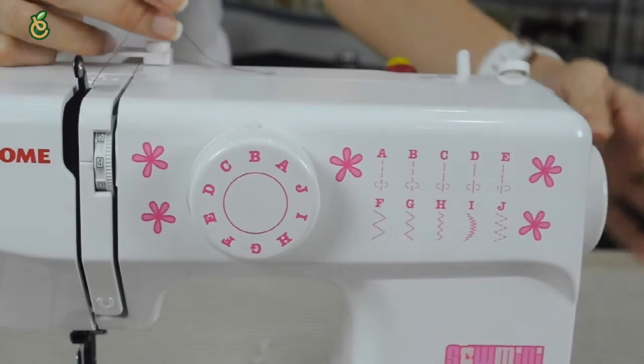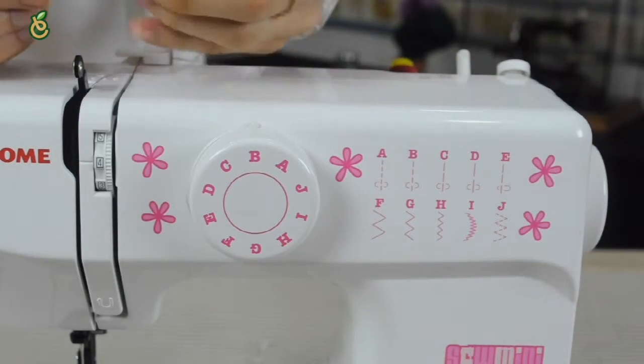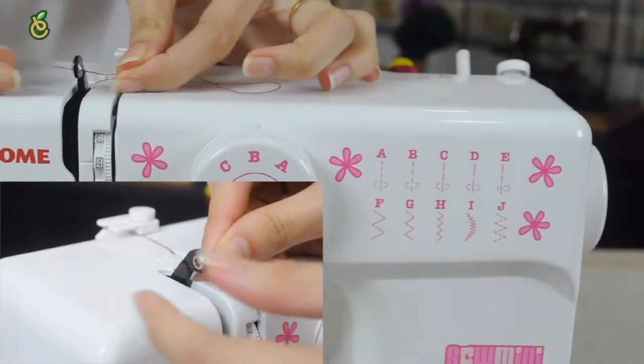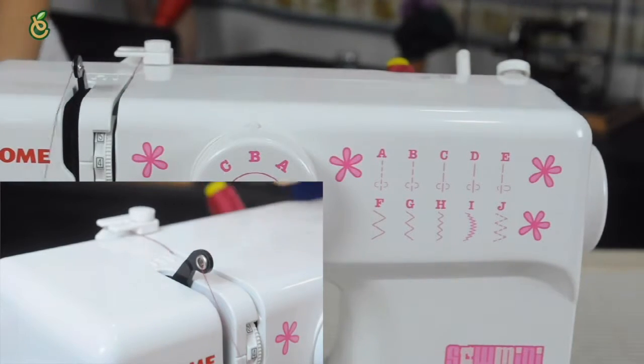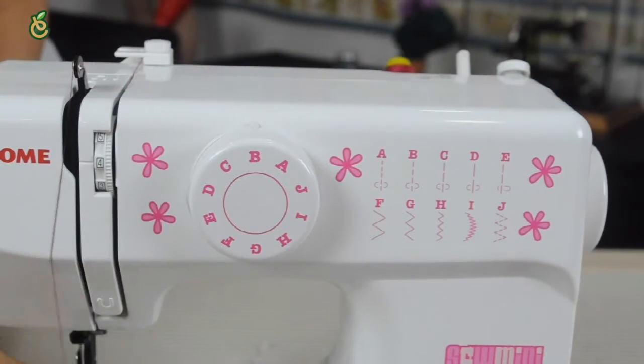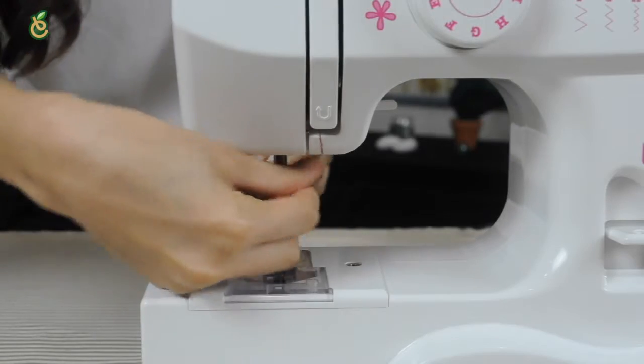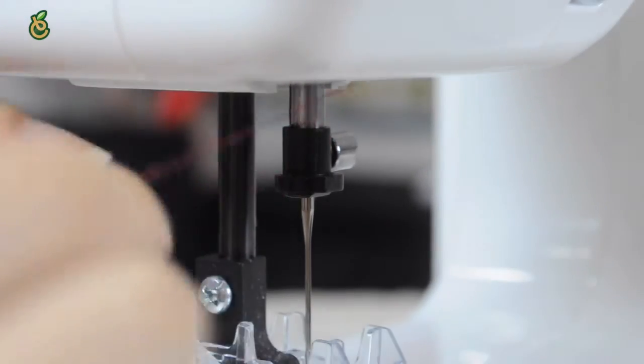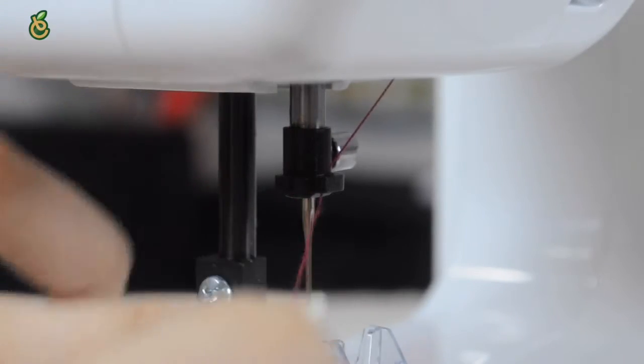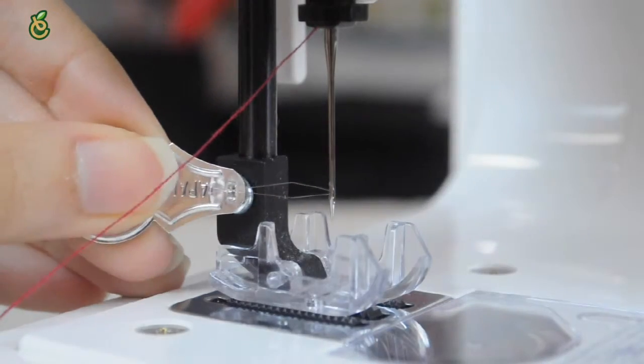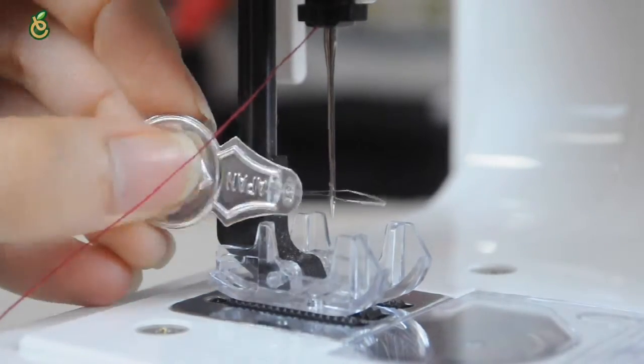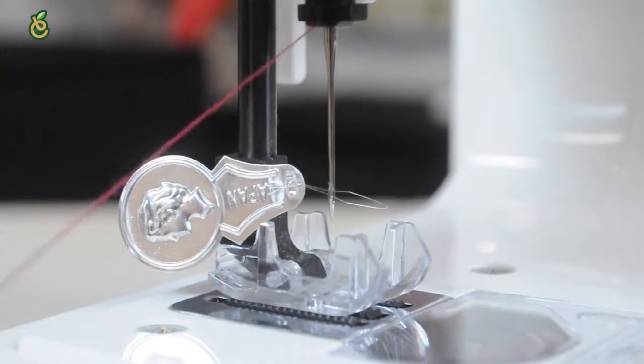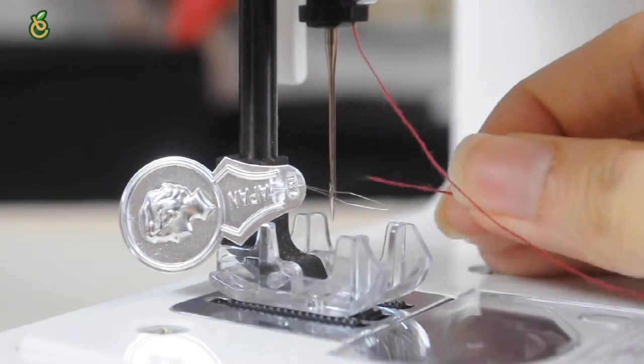Pass the thread through the eye of the take-up lever from the right to the left. Draw the thread down along the left panel and pass it behind the needle bar thread guide from the left. Insert the thread loop through the needle eye from behind and pass the thread end through the thread loop.